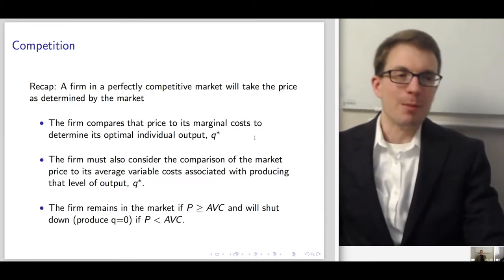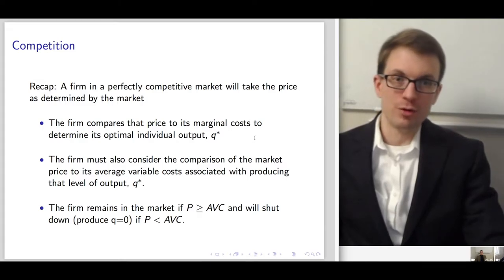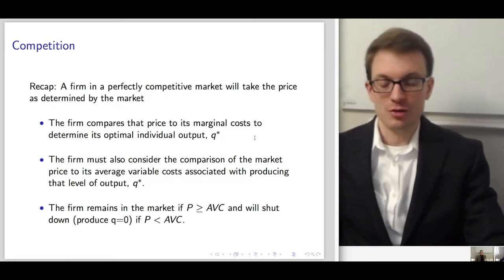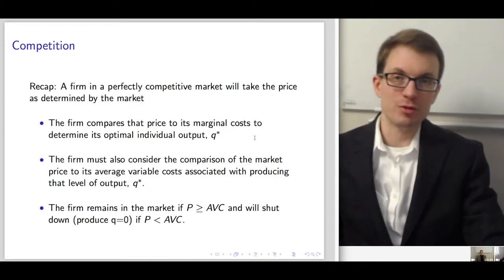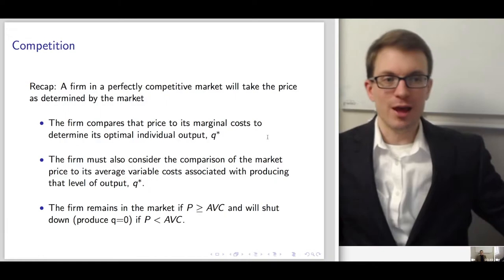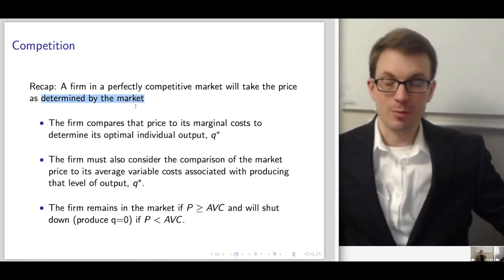Recap: thinking about a perfectly competitive market. With a perfectly competitive market, there are so many firms and so many buyers that no individual firm and no individual buyer is able to influence the market price. Everybody takes the market price as given, as determined by the actions of the rest of the participants — that's what we mean by determined by the market.